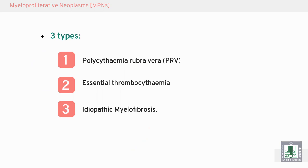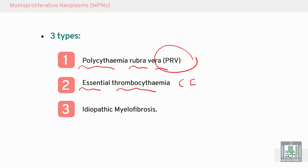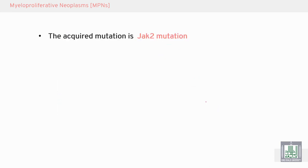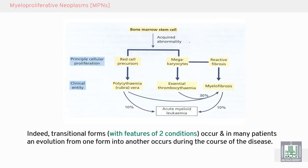We have three types of MPN: polycythemia vera, myelofibrosis, and essential thrombocythemia. The acquired mutation of MPN is due to JAK2 mutation — a tumor stem cell acquired mutation.